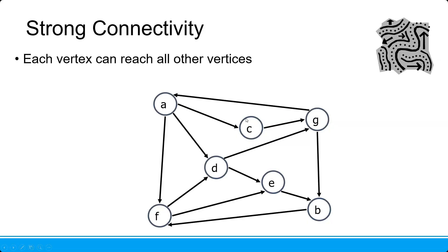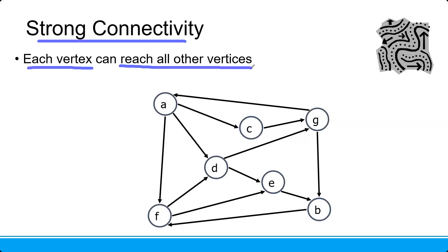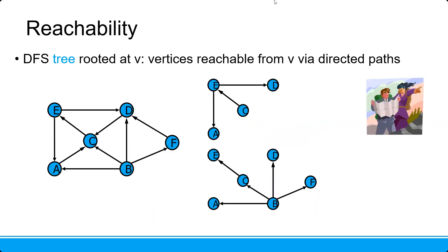Strong connectivity — what does it mean by strong connectivity? Its vertex can reach all other vertices from it. So in this case, it is not strong.